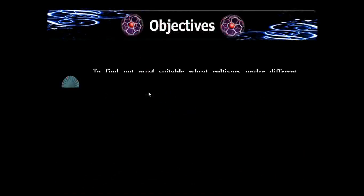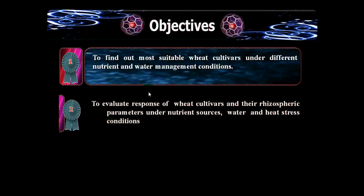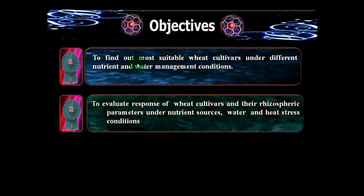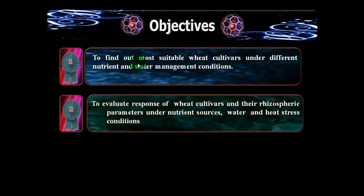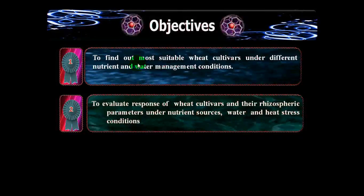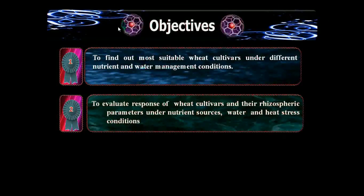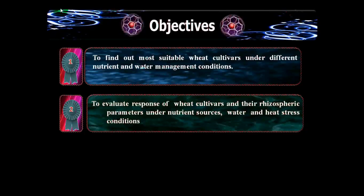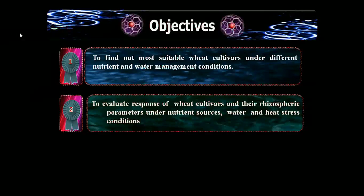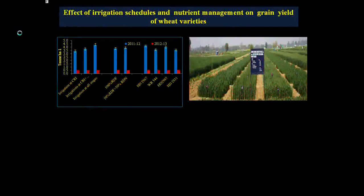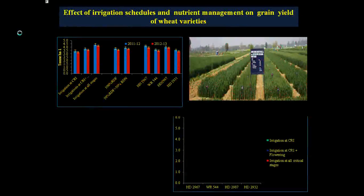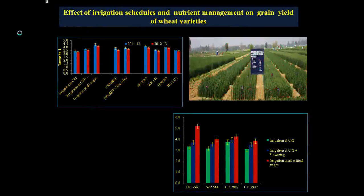The objectives were designed considering the above background: first, to find out the most suitable wheat cultivar under different nutrient and water management conditions; and second, to evaluate the response of wheat cultivars on agronomic parameters under nutrient, water, and heat stress conditions under field conditions.